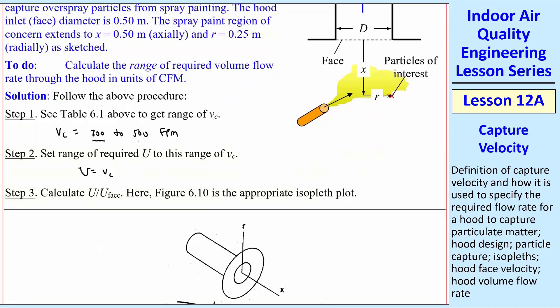If you were using the lower value, you'd set it to that. If you were using the upper value, you'd set it to that. Sometimes we just use an average in between. In this case, I asked you for a range. So the range would be the same, 200 to 500 feet per minute.